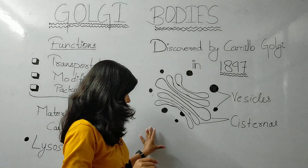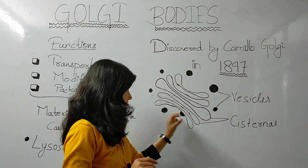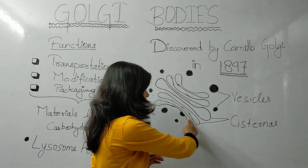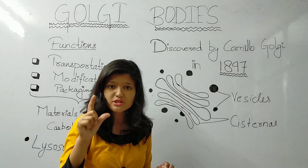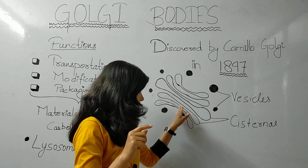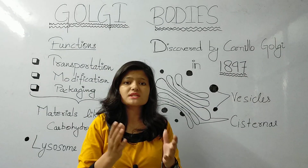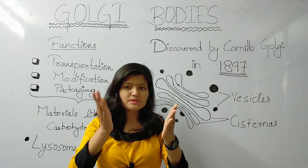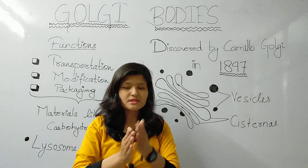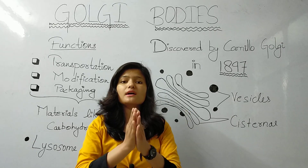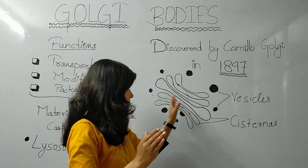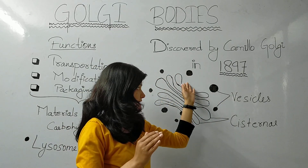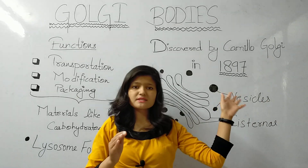The endoplasmic reticulum vesicles fuse with the Golgi body cisternae system. When lipids and proteins come in, modifications are made. Carbohydrates are added to proteins to form glycoproteins, and carbohydrates are added to lipids to form glycolipids. This is the modification process. After that, the vesicles are transferred from the cis phase to the trans phase.